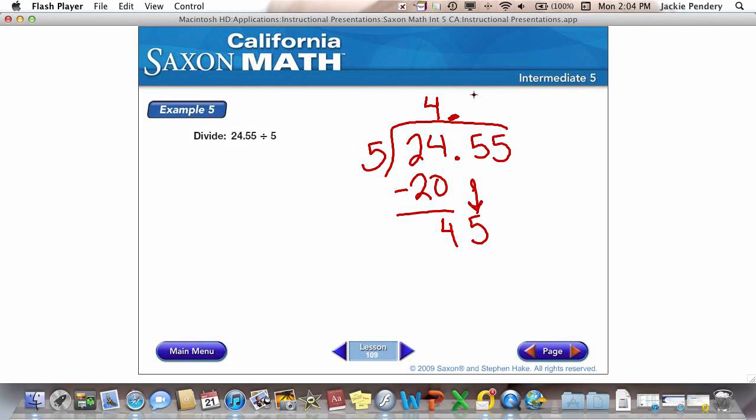5 goes into 45, 9 times. 9 times 5 is 45. We subtract. We bring down. 5 goes into 5 once. Multiply. Subtract. And we end up with 4.91.